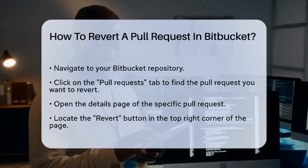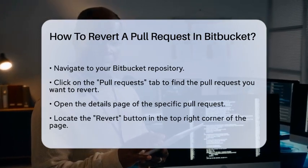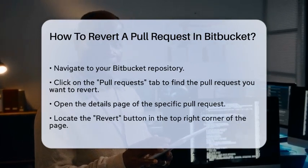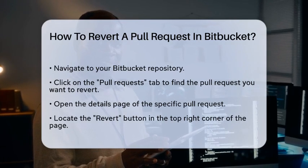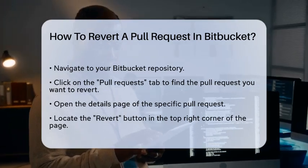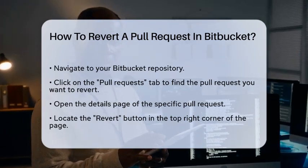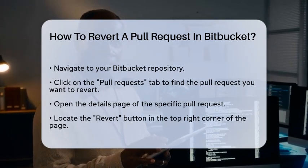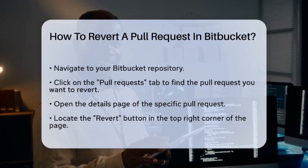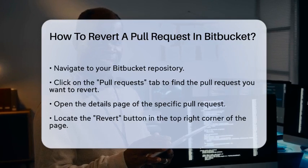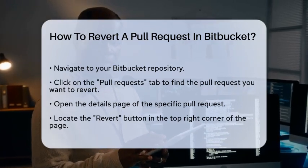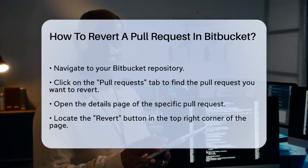First, navigate to the pull request that you want to revert. You can find this by going to your Bitbucket repository and clicking on the Pull Requests tab. Once you've located the specific pull request, click on it to open its details page.